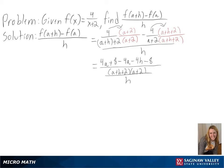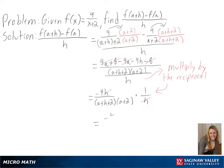We can then subtract our values, and then to divide, we can multiply by the reciprocal. And after canceling our h's, we are left with negative 4 over a plus h plus 2 times a plus 2 as our final answer.